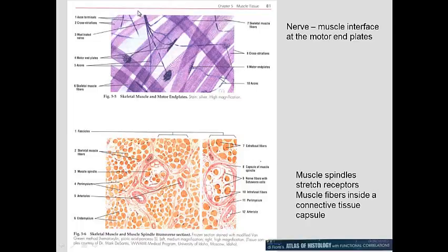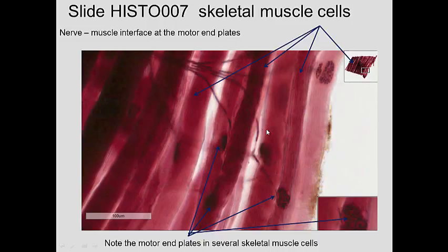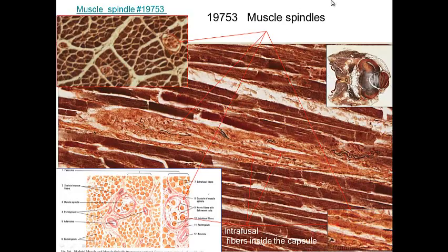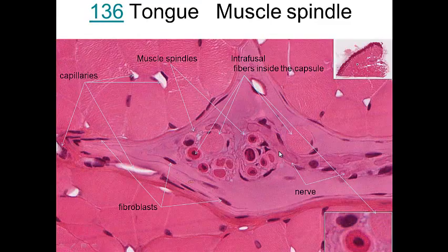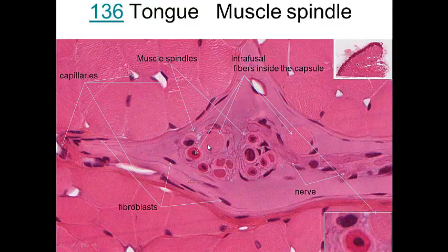One nerve innervates more than one motor end plate. There is also the muscle spindle, which is a stretch receptor. It has a connective tissue capsule with muscle fiber cells inside — these are intrafusal fibers within the capsule. The motor end plates innervate skeletal muscle cells from outside, while the muscle spindle acts as a receptor. The capsule is dense irregular connective tissue. Looking at the tongue, we can see muscle spindles with their intrafusal fibers — these are stretch receptors within skeletal muscle.